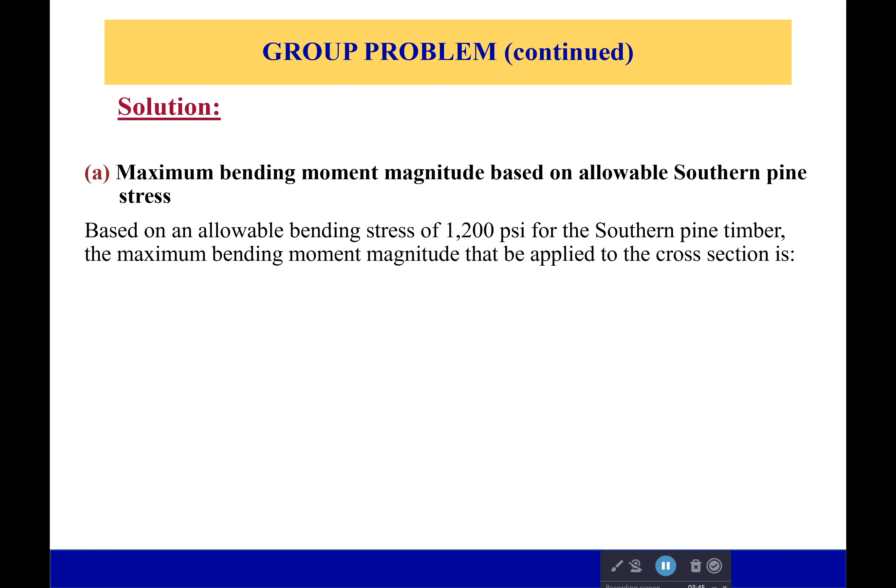So what is the maximum bending moment based on allowable southern pine stress? Remember there's going to be two cases here, one for steel and one for southern pine, and we have to go with the lower bending moment. Because if we go with the higher one, it's going to cause it to fail. So based on the allowable bending stress of 1200 psi of the southern pine timber, we use our flexure formula. We go to the very end because that's where we're always going to find our maximum bending stresses. We rearrange and we get a bending moment of 1172 kip inches.